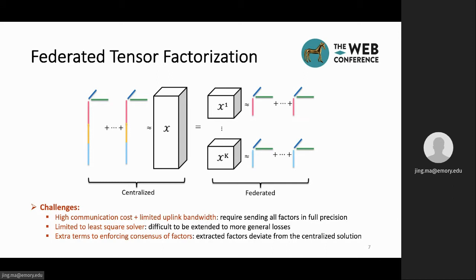In addition, existing federated tensor factorization algorithms are limited to least square loss, which makes it difficult to be extended to more general losses. And the introduction of the extra terms to enforce consensus could lead to the extracted factors deviating from the centralized solution.